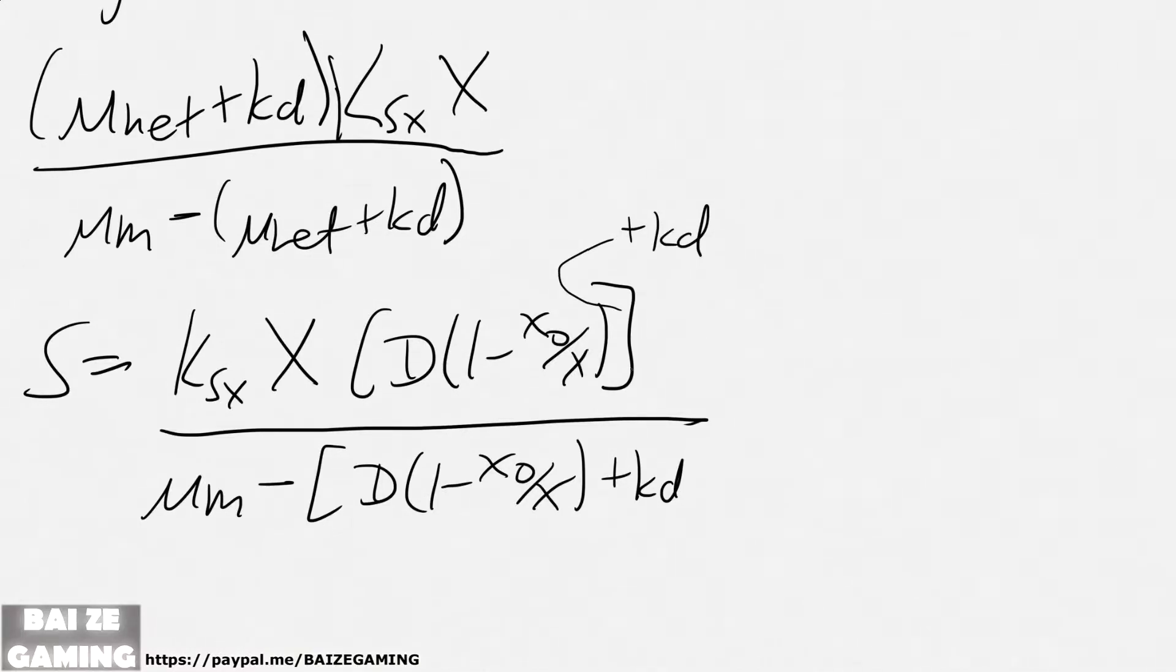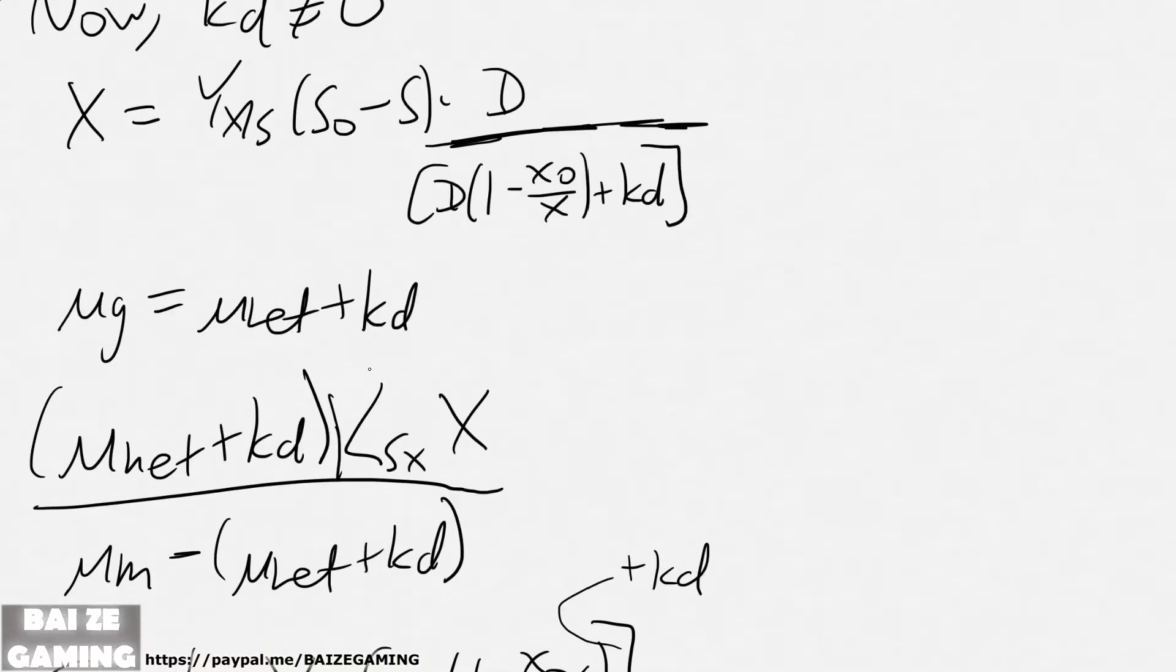Oops, so I forgot the kd, so now you'll be getting a kd inside of this, inside of the arguments. And yeah, that's it in terms of S. Again, it's implicit because X is here and X itself is also a function of S like over here. So yeah...